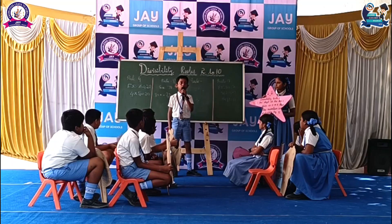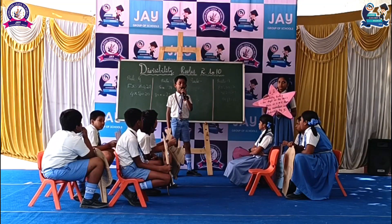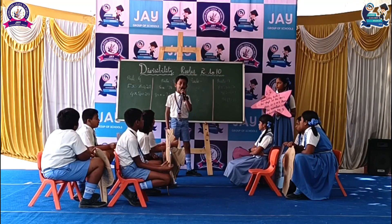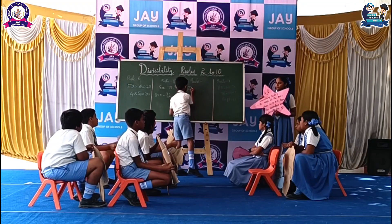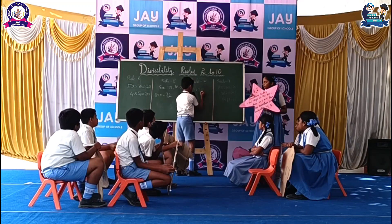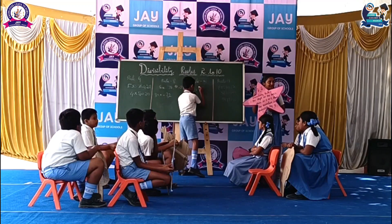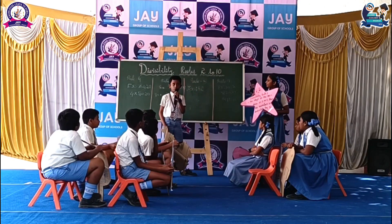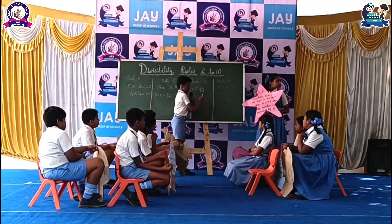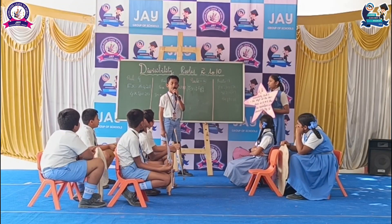Myself is Nicholas. Now we are going to say the divisibility rule for table 5. If the one's place of a number is 0 or 5, then the number is divisible by 5. Let's see one example. The number is 425. What number is in the one's place? 5. Our condition is 0 or 5, and the one's place is 5. So the given number is divisible by 5.